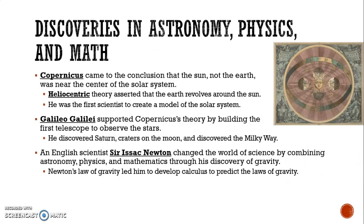There are a lot of different people who made discoveries during the scientific revolution that we still use today. The most important was Copernicus, who came to the conclusion that the sun, not the Earth, was the center of the solar system. The heliocentric theory was directly contradictory to the geocentric theory, asserting that the Earth revolves around the sun. He was the first scientist to create a model of the solar system. Galileo Galilei supported Copernicus' theory by building the first telescope to observe the stars. He discovered Saturn, craters on the moon, and also discovered the Milky Way.